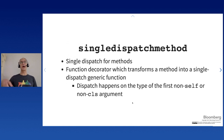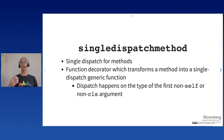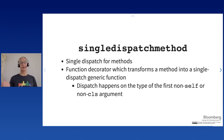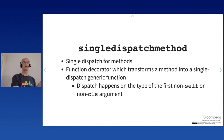singledispatchmethod is the same concept for class methods — a function decorator that transforms a method into a single-dispatch generic function. Dispatch happens on the type of the first non-self or non-class argument, so it works with both instance methods and class methods.